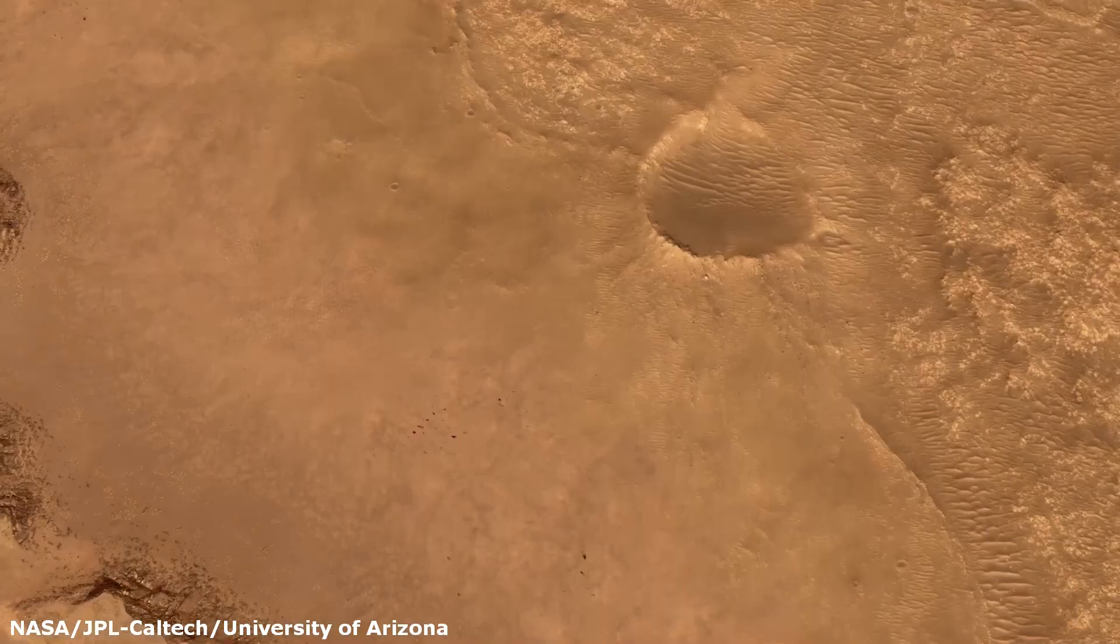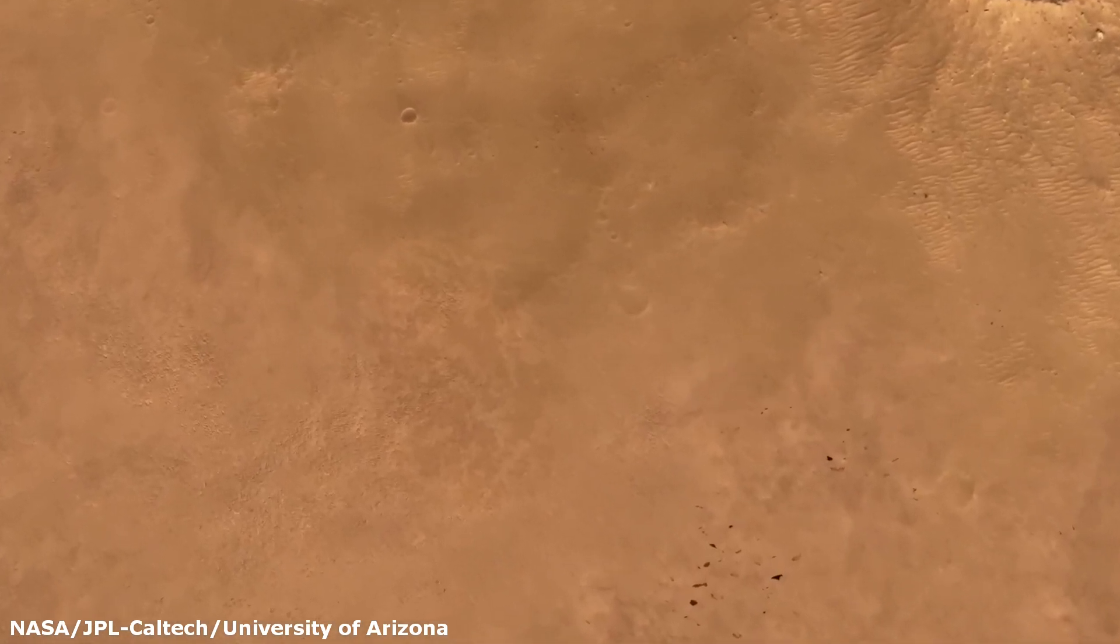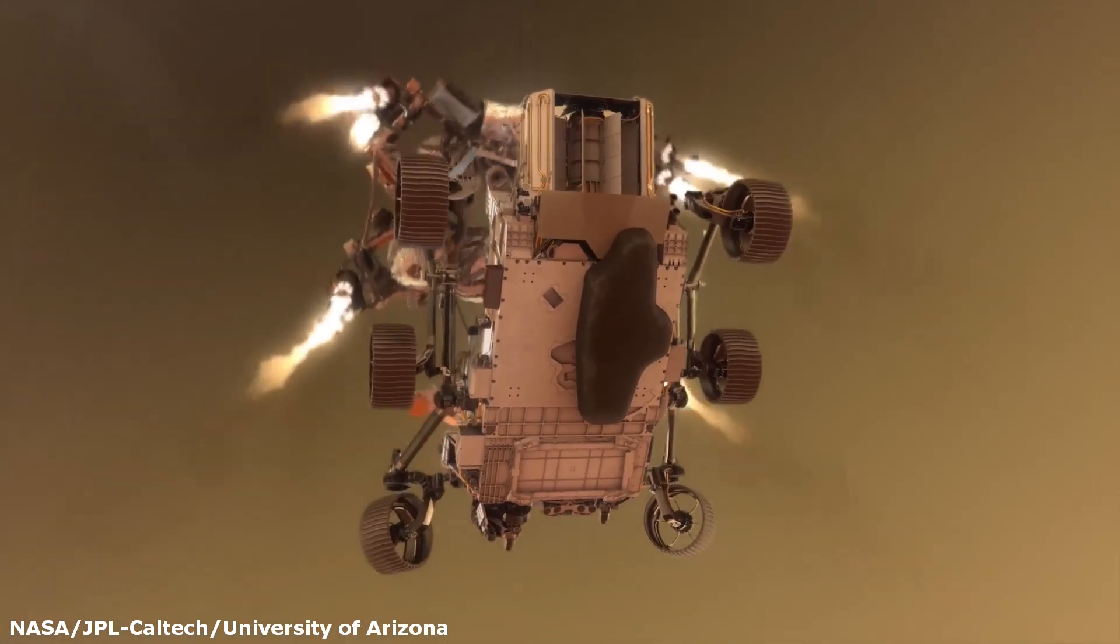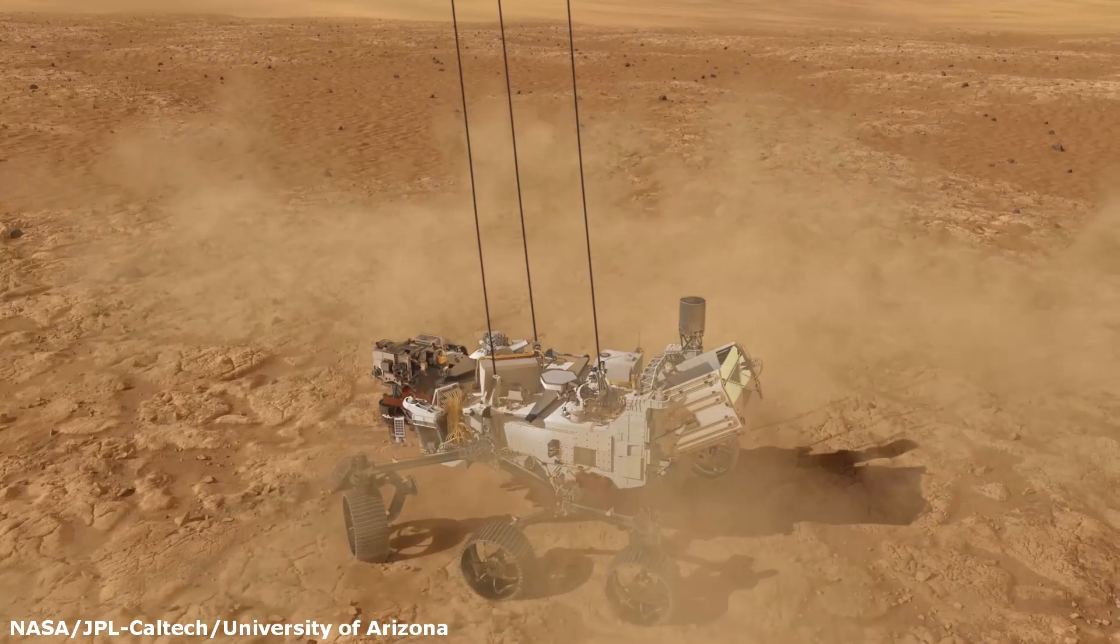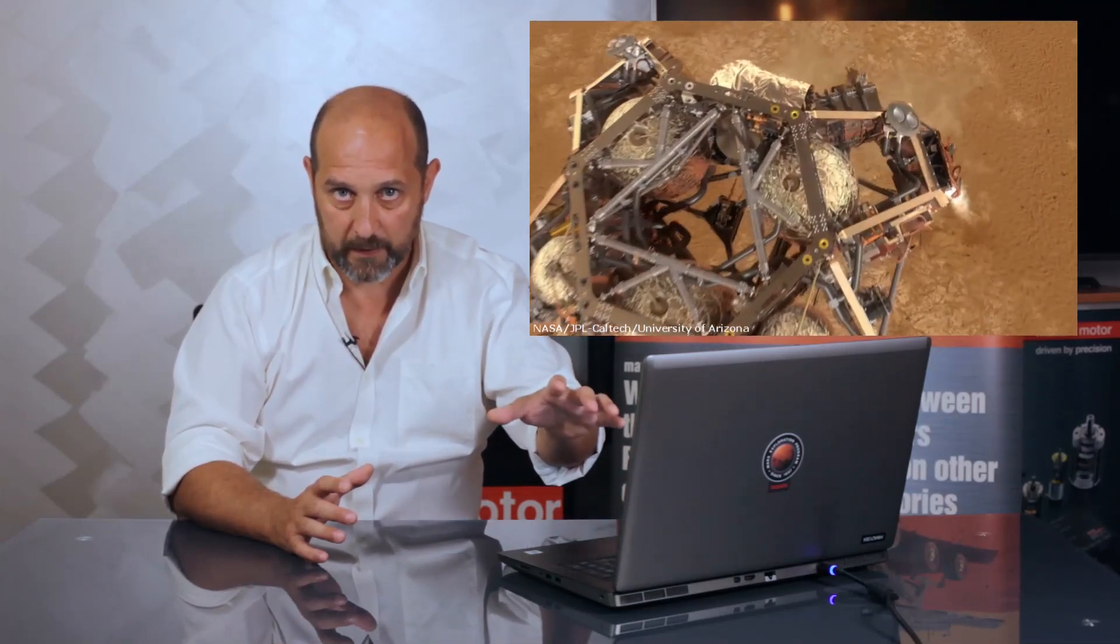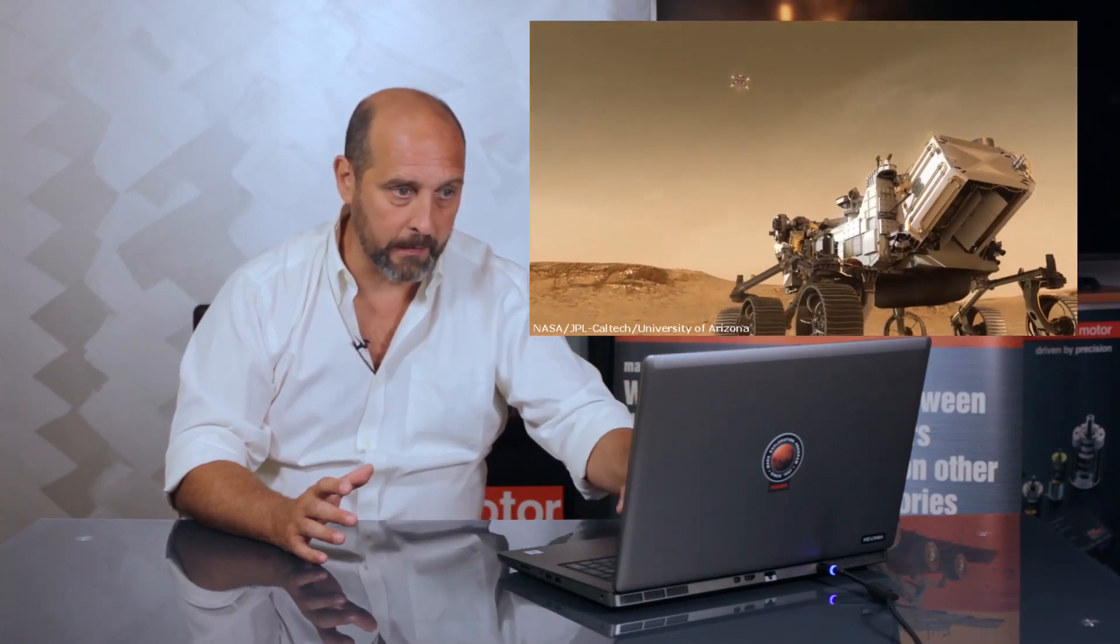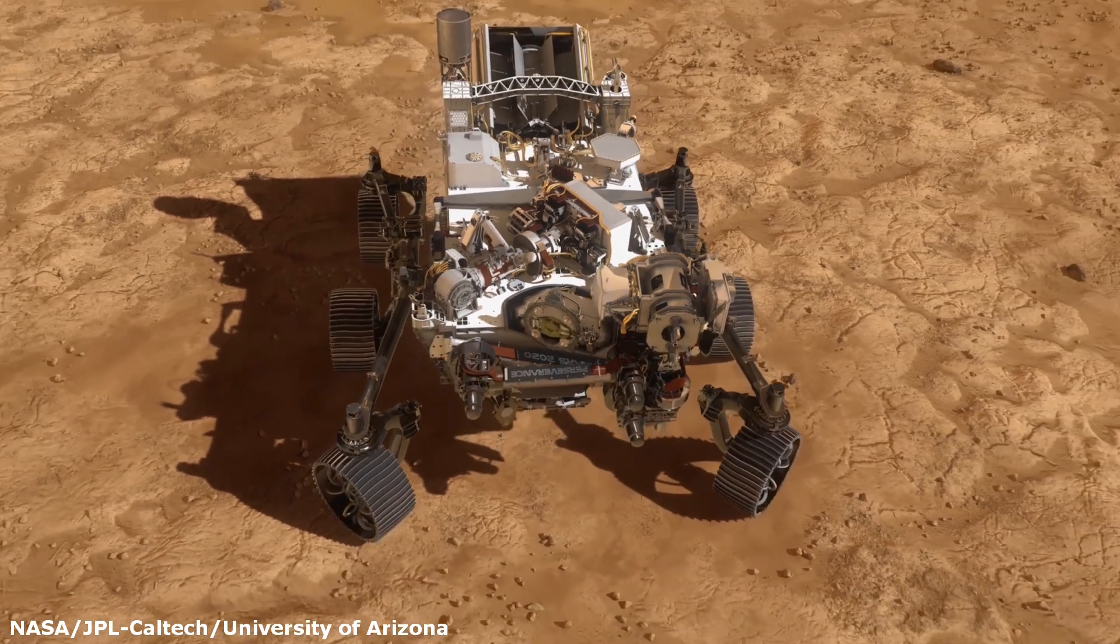When it reaches 21 meters of altitude, it will start what's known as the crane maneuver. This has been attempted for the first time in Curiosity and has proven to be a great alternative to the airbags used previously in Spirit and Opportunity. As soon as the rover detects that the wheels are touching the ground, the connection cables are broken and the crane is free to fly away, otherwise it would fall on top of the rover.